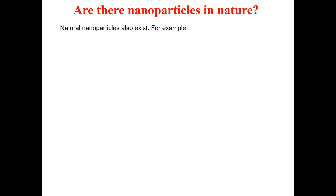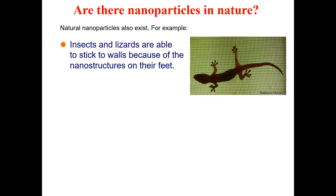The second question: are there nanoparticles or nanotechnology in nature? When we look around at animals, insects, and plants, we ask whether there is proof for the existence of nanotechnology in nature. The answer is yes — there are several clear examples. The first example is insects and lizards, which are able to stick to walls.